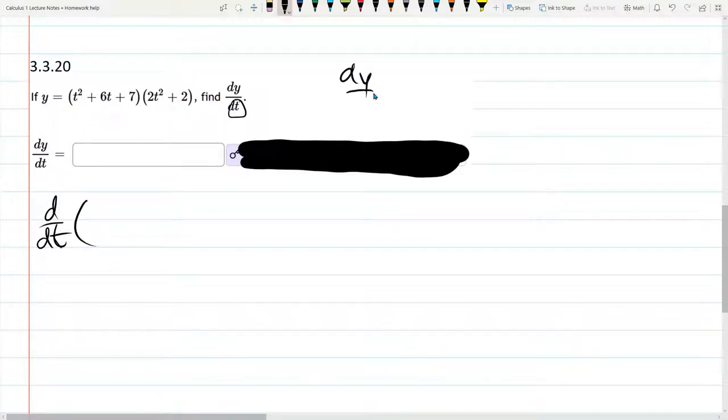And this dy/dt, that is the same as d/dt of y. And all I'm going to do is write the other version of y, the useful version of y, in here.